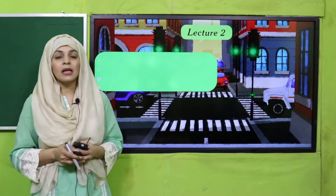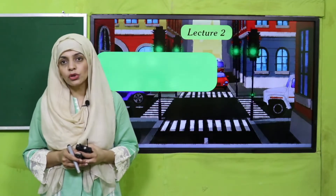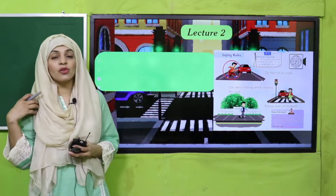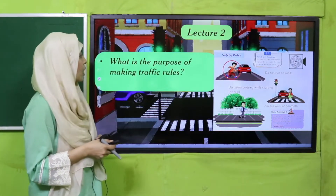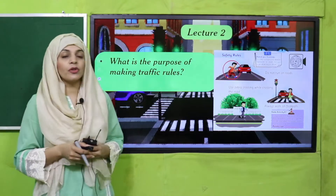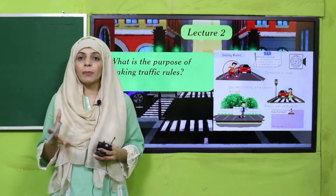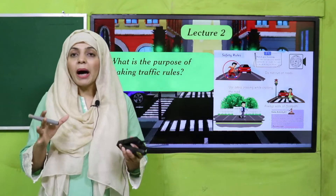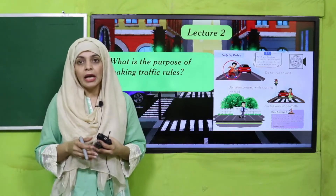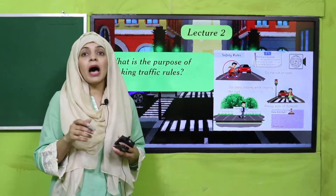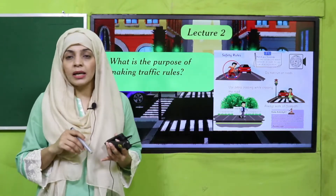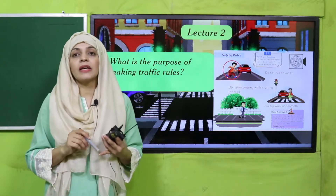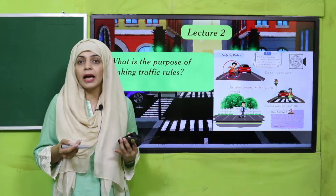In lecture number two, we discussed different safety rules on the roads. The purpose of making traffic rules is to keep everybody around you safe so that no accidents happen and everyone remains safe. Apart from this, you should never play or run on the road, use the footpath, and when crossing the road, use the zebra crossing.